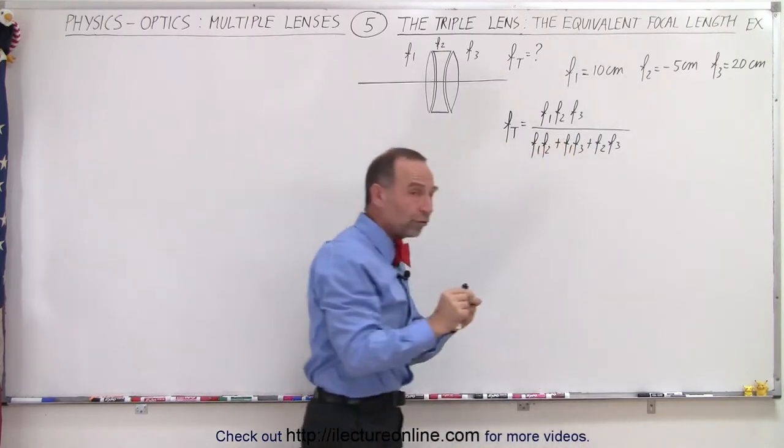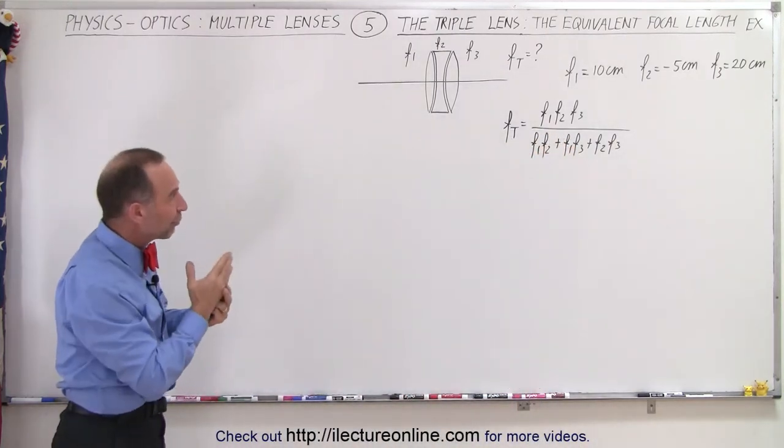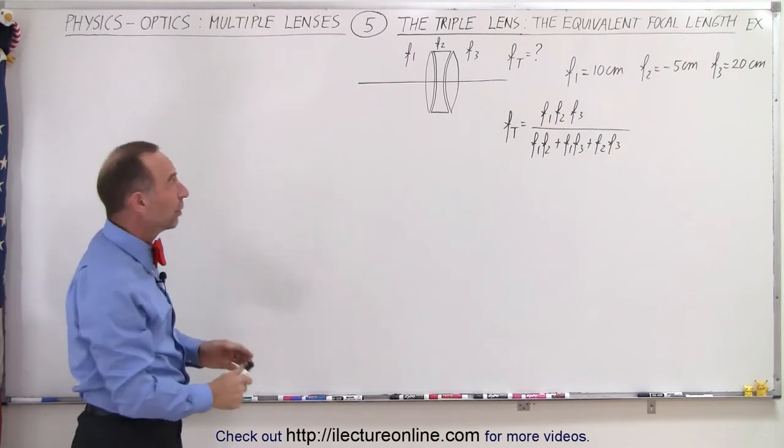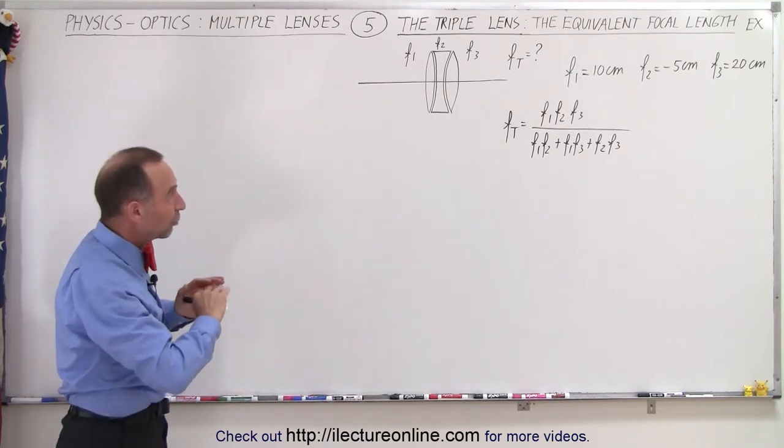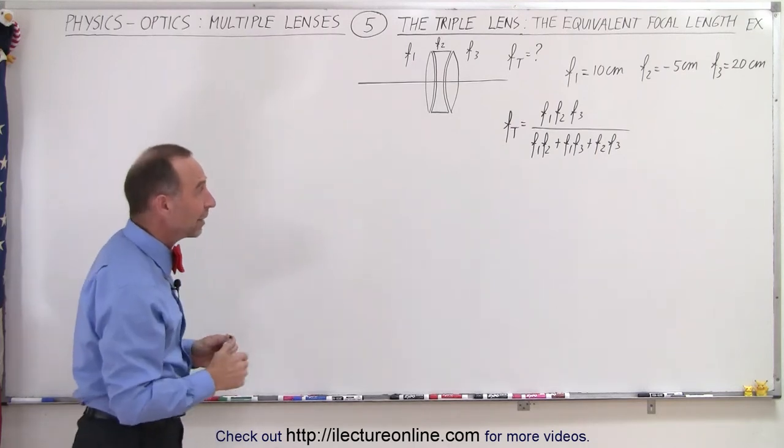Notice that the one with the shortest focal length is the most powerful lens, and we'll see if that diverging lens overpowers the other two converging lenses. So as a triplet, does it appear as a converging or diverging lens? Well, we're about to find out.